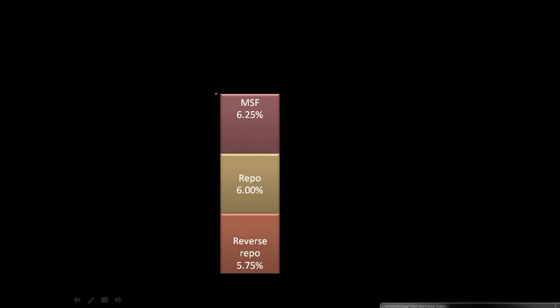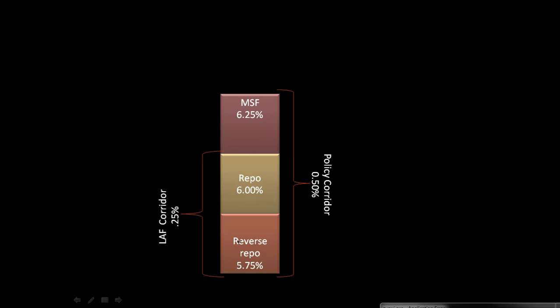The present MSF rate is 6.25%, the repo rate is 6%, and the reverse repo rate is 5.75% — though these may change when you are watching this video. The difference between the MSF rate and the reverse repo rate is called the policy corridor, which is 0.50%. The difference between the repo rate and the reverse repo rate is called the LAF corridor — the Liquidity Adjustment Facility corridor — which is currently 25 basis points.